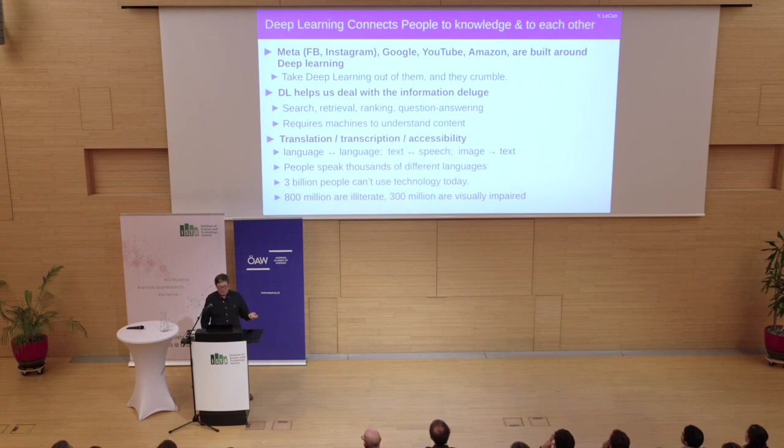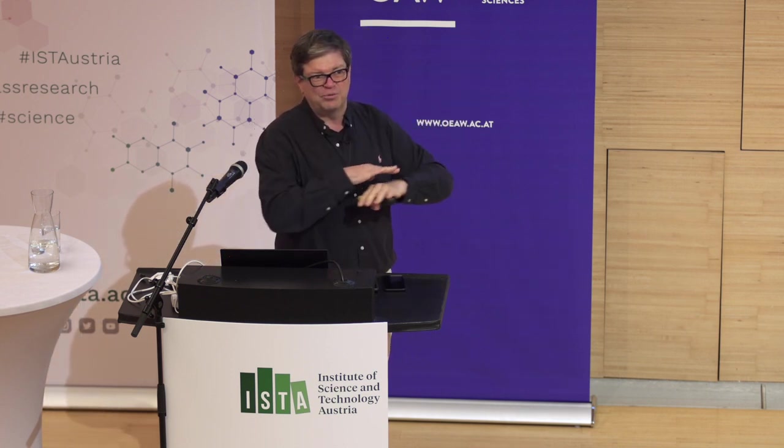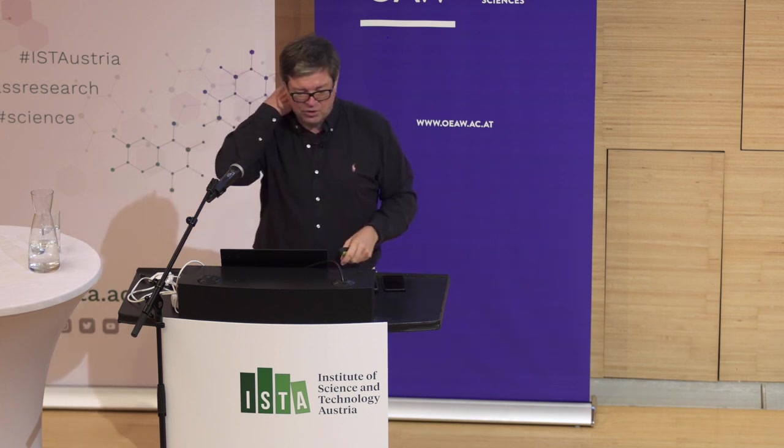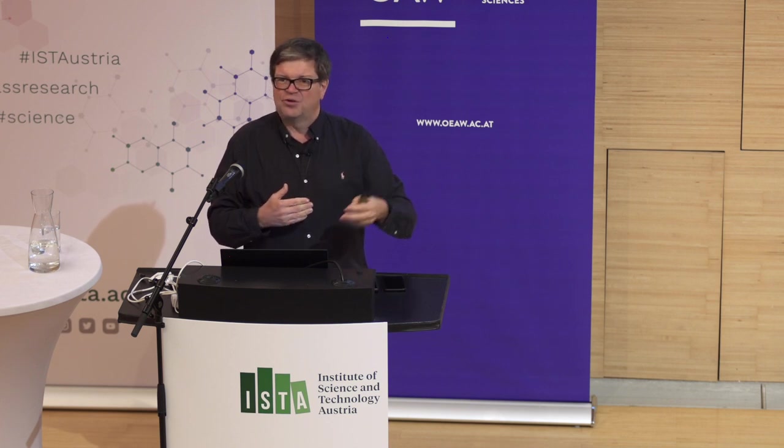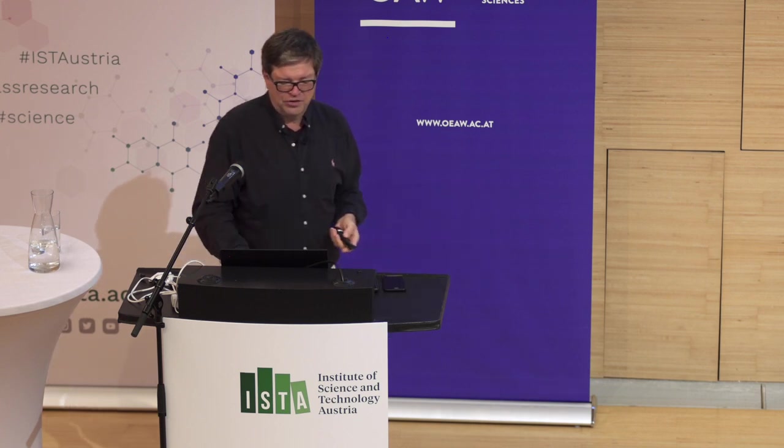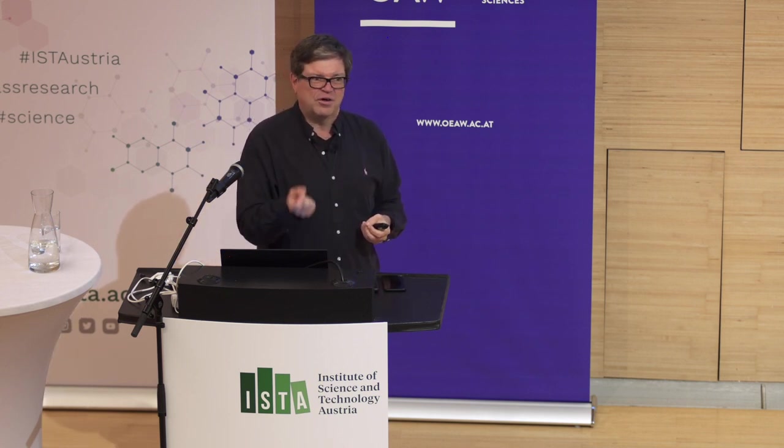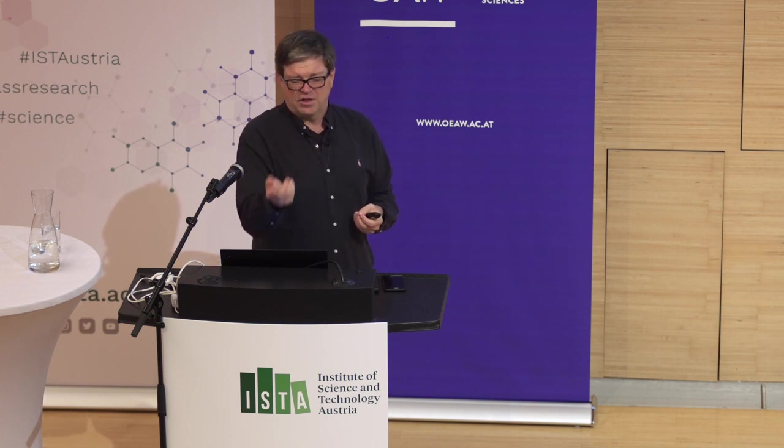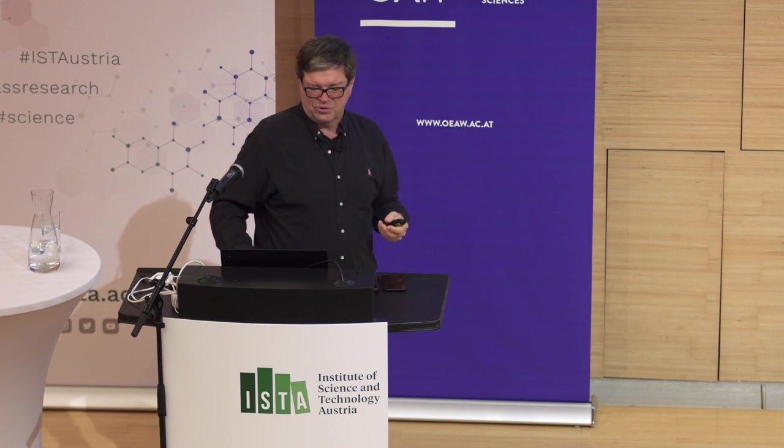So if you take Meta, so Facebook, Instagram, Google, YouTube, Amazon, all of those companies now are completely built around deep learning. You take deep learning, if you try to rip deep learning out of them, the companies crumble. They're completely built around it. And what deep learning does is not just do things like recognize speech or understand intent when you talk to your smart speaker or whatever. They can also do translation. But the main thing they do is content filtering. So things like you type a search on Google. And the results that Google will show you depend on, first of all, what your personal interests are, but also a lot on the quality of the content and whether other people kind of like the results. Ranking, question answering, you can ask questions directly on Google and things like that. So that requires machines to understand content.